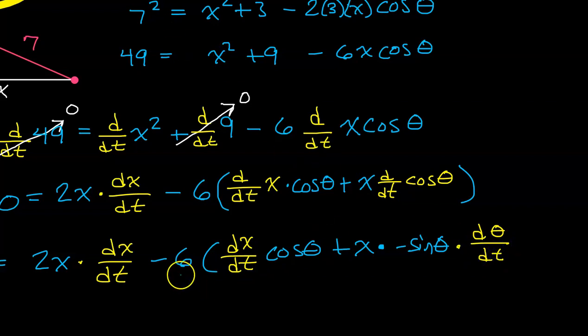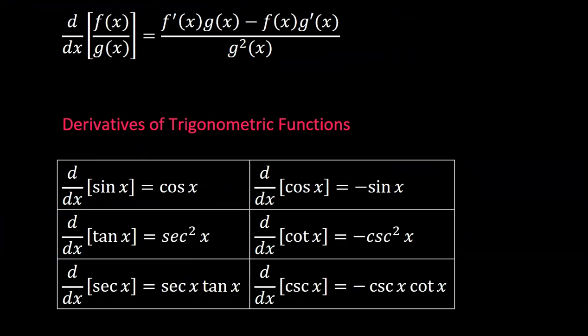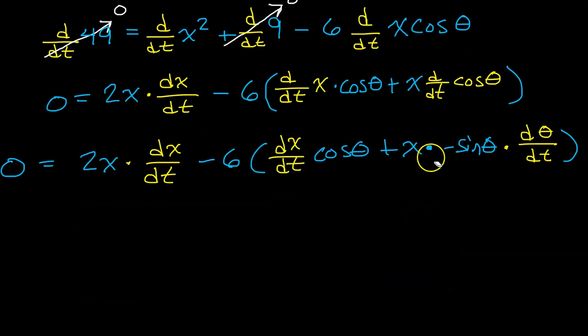We're going to have 0 equals. I've got this 2x times dx dt. We'll keep that minus 6 out there. Now, the derivative of x, it's just a single variable. So, all we can really do with that is put dx dt. Times cosine theta, just bringing all that down. And then we have plus x. But the derivative of cosine is negative sine. So, I'm going to have times negative sine theta. But these variables do not match. So, I'm going to have to use the chain rule and multiply by the derivative of the inner function, which will just give us d theta dt. And don't forget that all of this is being multiplied by 6.